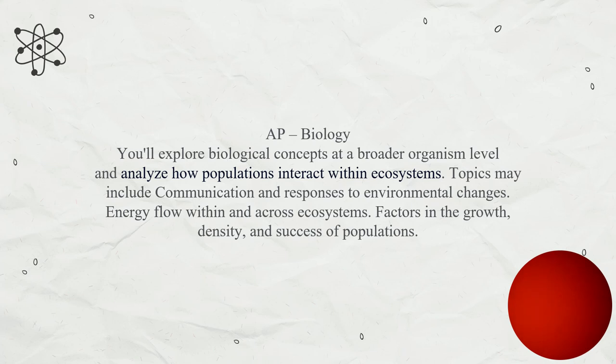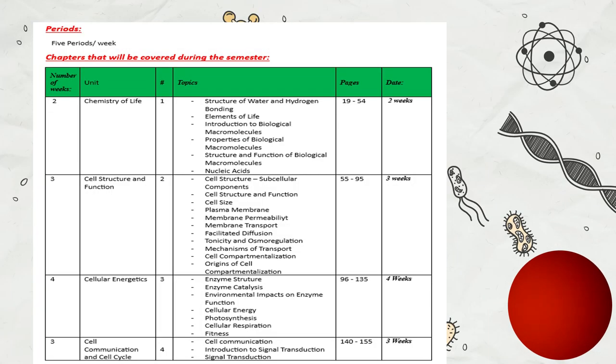We will have the whole year, inshallah, until the end of March, to be done from the course description overall with the labs that will be supervised. As we talked previously about biological concepts and about organisms' level analysis, the population and ecosystem, we will go through communication, responses to environment changes, also the energy flow between the ecosystems and factors that can affect them. We will start with five periods per week about the AP courses. The AP course includes eight units.